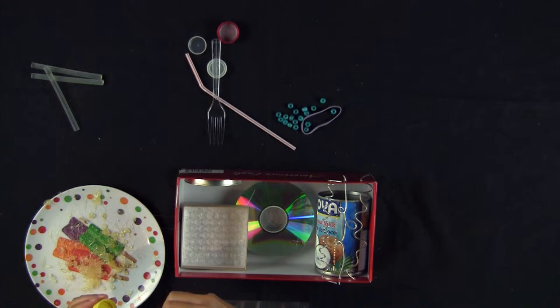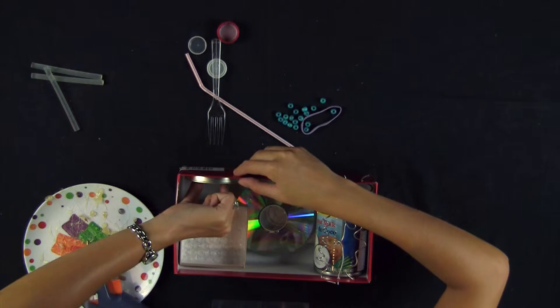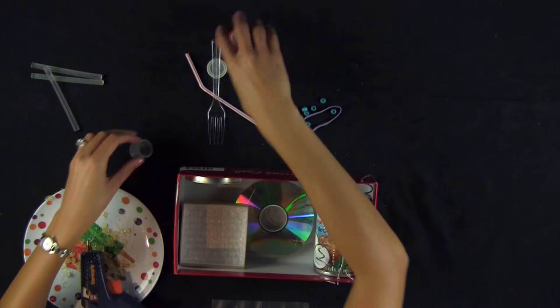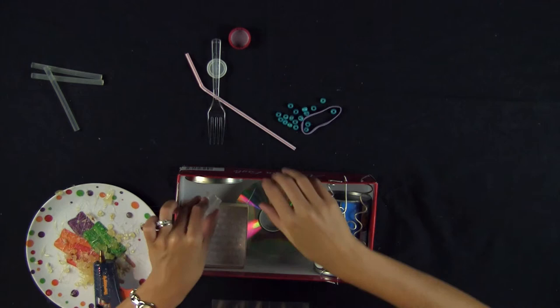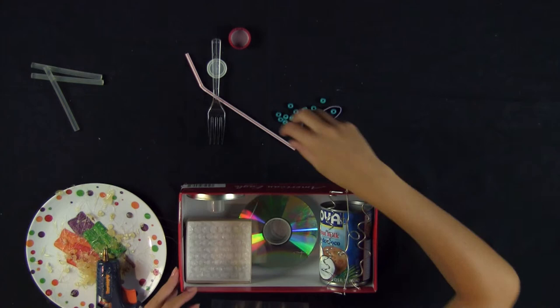And I'm going to make some concentric circles, which means circles within circles, by putting a lid inside a lid, and then put another lid on top of that. So we have three concentric circles going on right here.